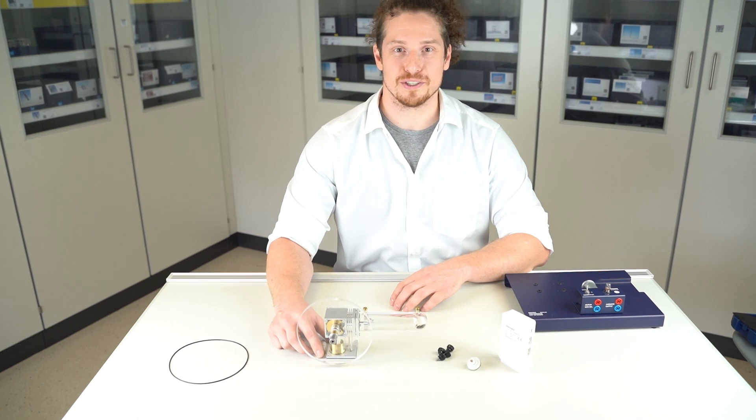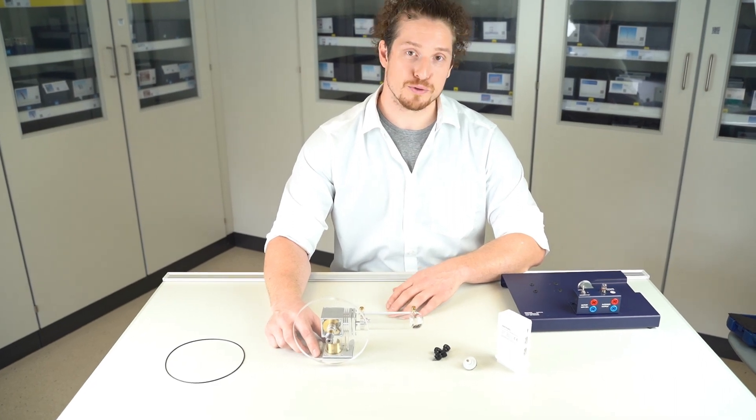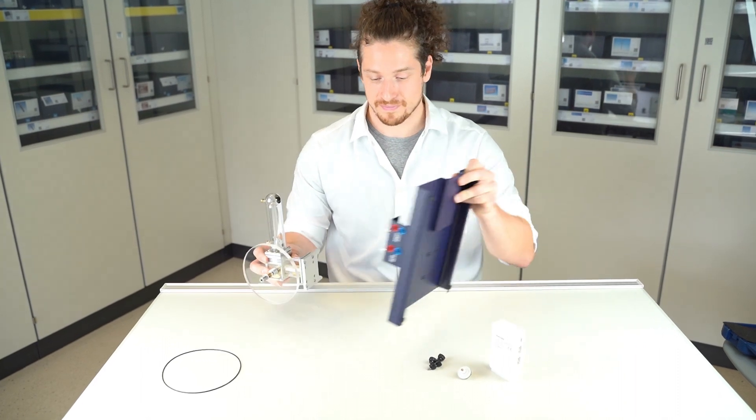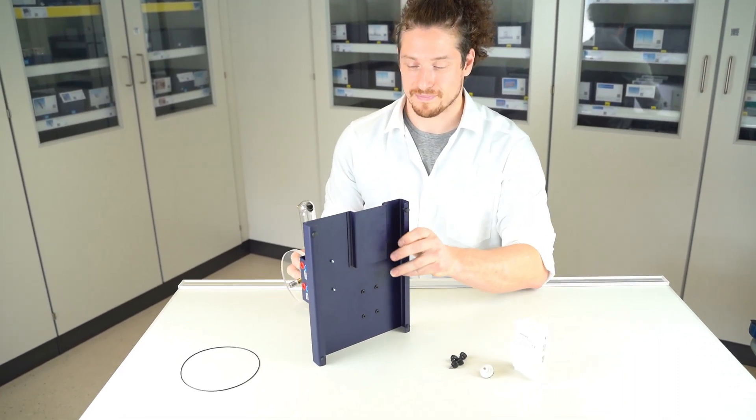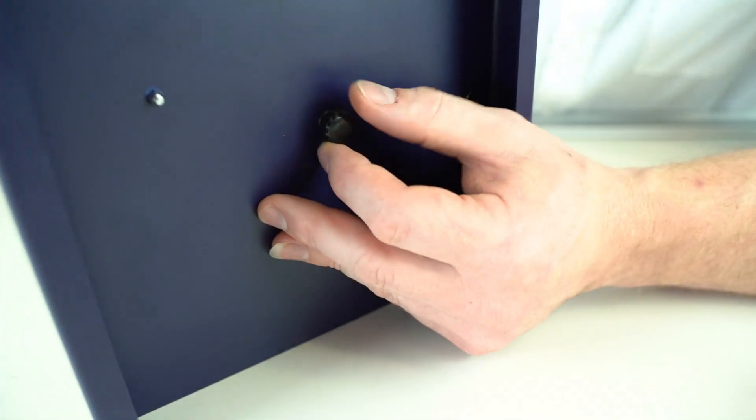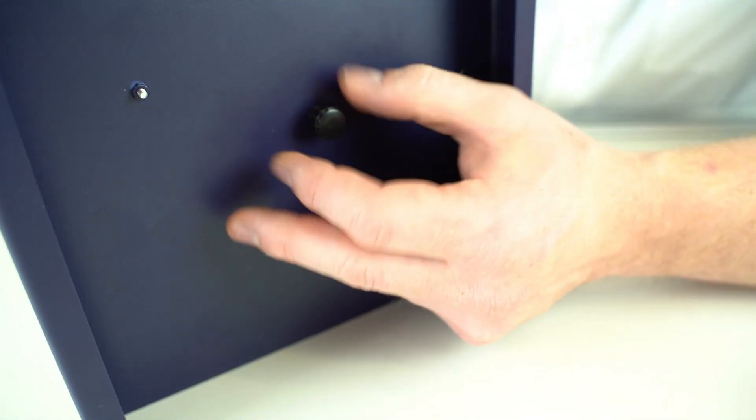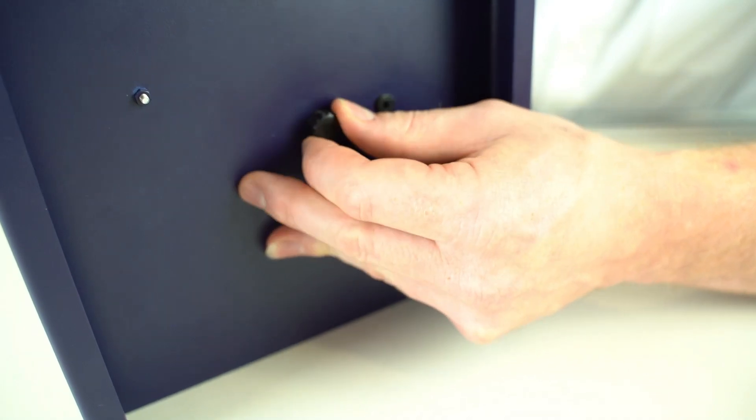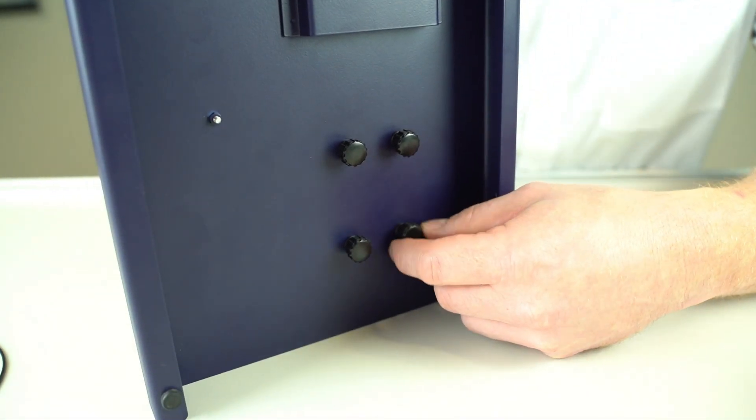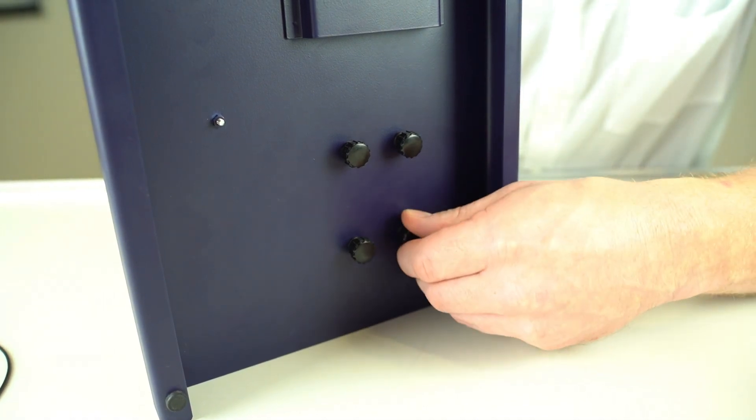In order to complete the mounting of the new module it is now screwed back onto the base plate. Tighten all four delivered screws from the bottom. Make sure to properly tighten all four screws.